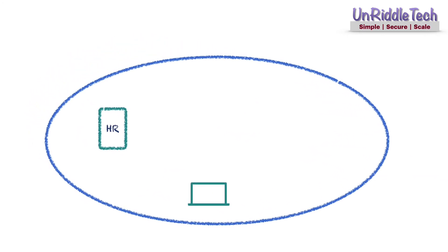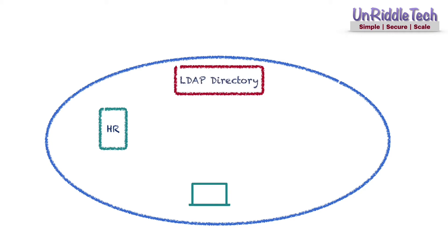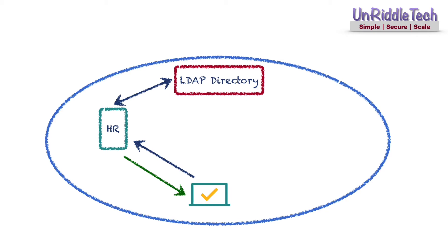The easiest way to solve this problem is to use a centralized LDAP directory to create and manage user accounts. Any application may be configured to contact the LDAP directory for user authentication. When the user enters their credentials, the application checks in the LDAP directory. If the user is successfully authenticated, write access may be provided based on authorization information stored within the application.